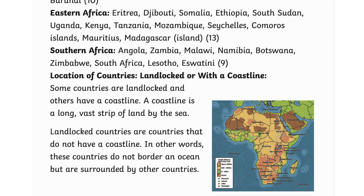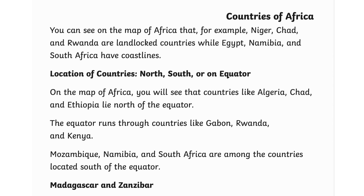Location of countries: landlocked or with a coastline. Some countries are landlocked and others have a coastline. A coastline is a long vast strip of land by the sea. Landlocked countries do not have a coastline — they do not border an ocean but are surrounded by other countries. For example, Niger, Chad, and Rwanda are landlocked countries, while Egypt, Namibia, and South Africa have coastlines.